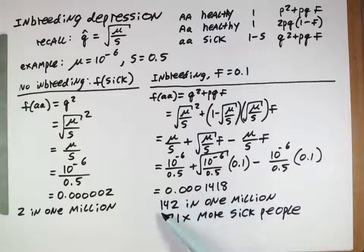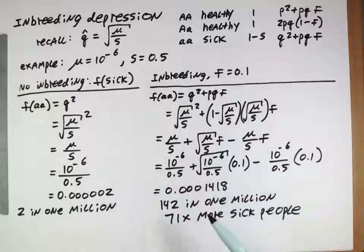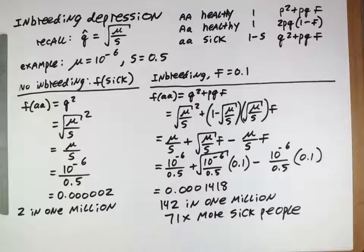If you think about this population, it looks much much less healthy than this population because whatever that genetic disorder is that's in both populations at the same frequency in terms of the alleles is 71 times more likely to be manifested in individuals and observed.